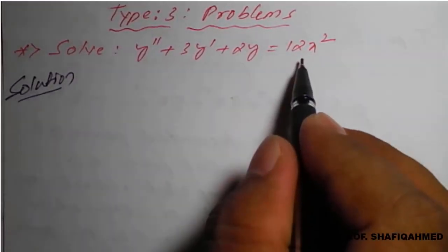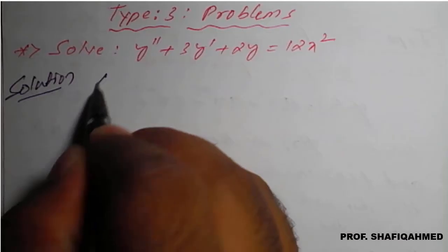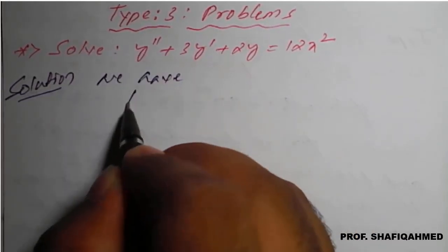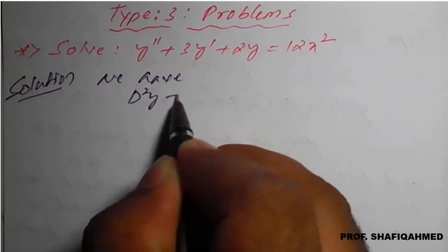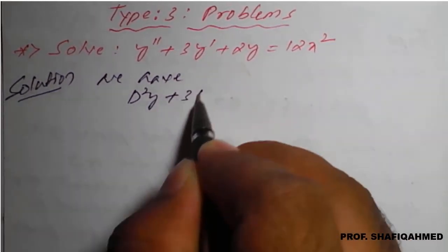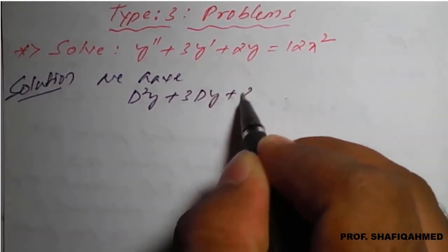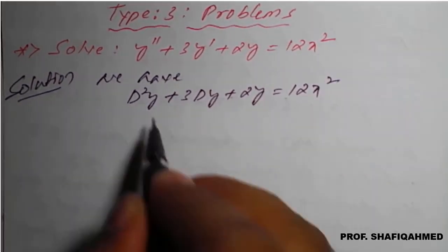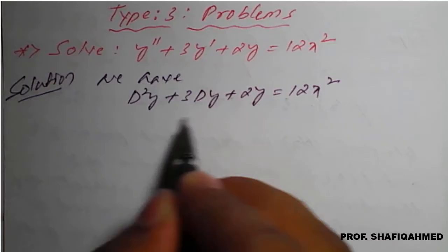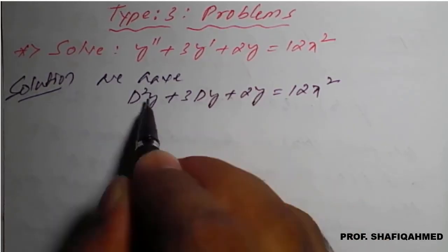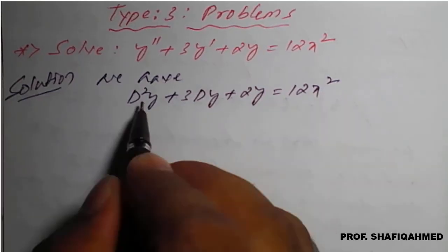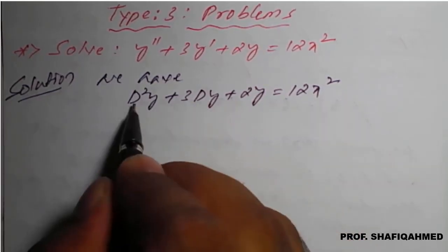The given differential equation can be written as: y double dash as d-square of y, plus 3 times y dash as d of y, plus 2y equal to 12x square. From the left-hand side we will get the complementary function, and from the right-hand side we will get the particular integral. Let us find the complementary function first.